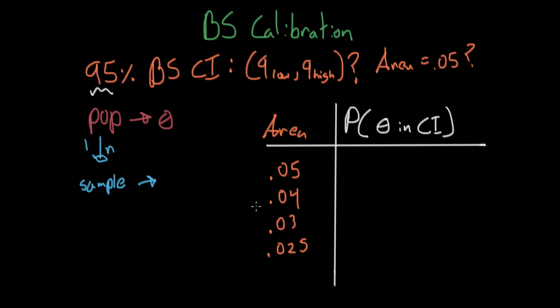We, of course, use the plug-in principle. So instead of theta, we go ahead and use theta hat. We assume theta hat is going to be what we're looking for that's going to be inside the confidence intervals.